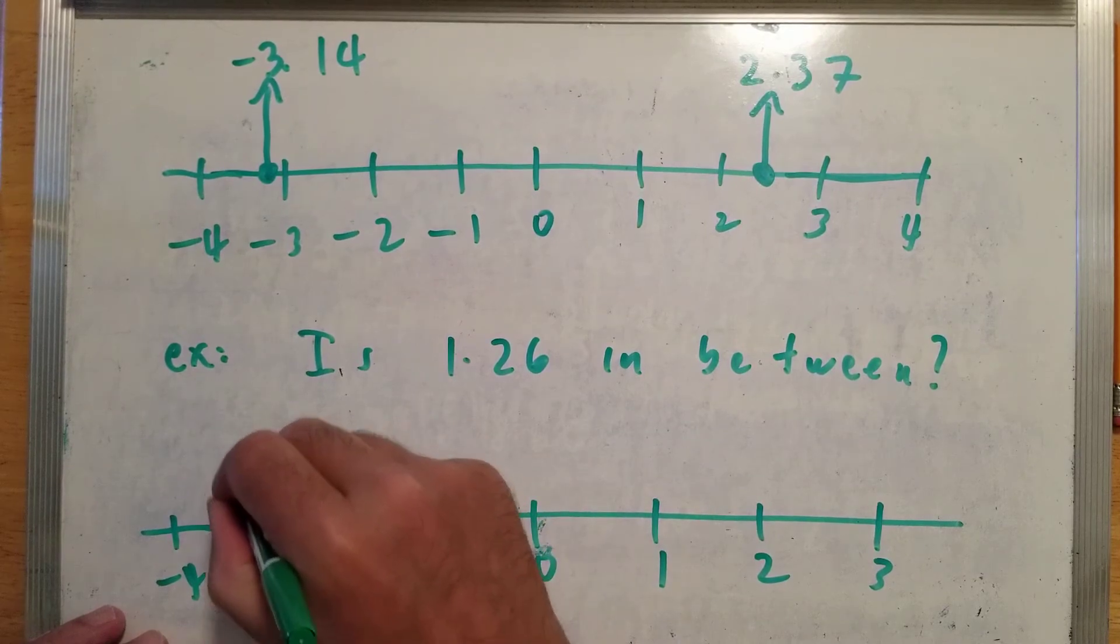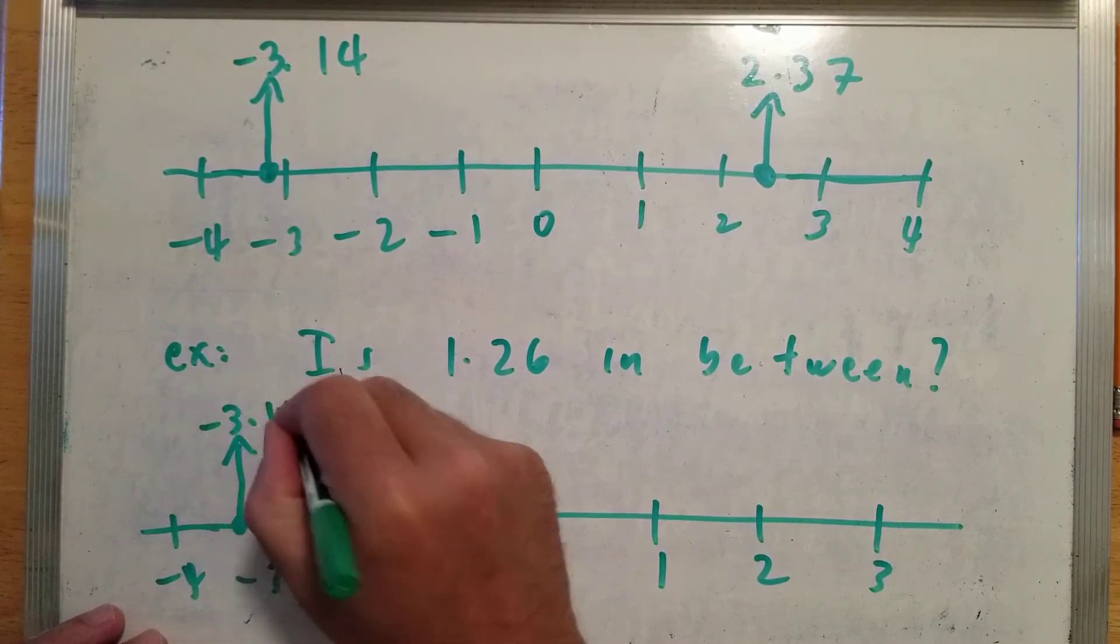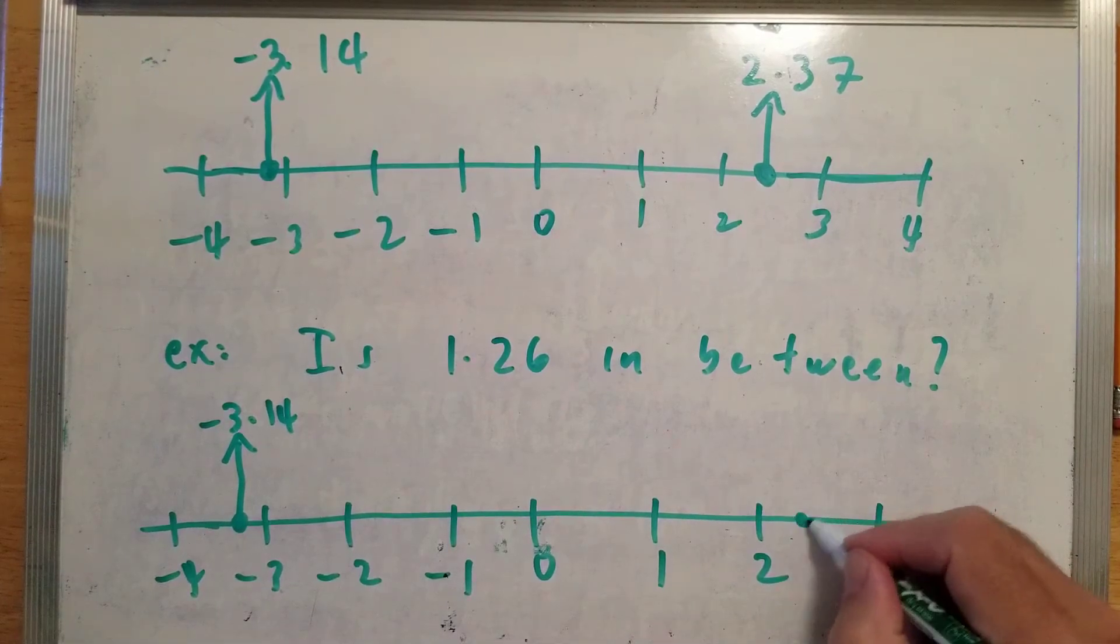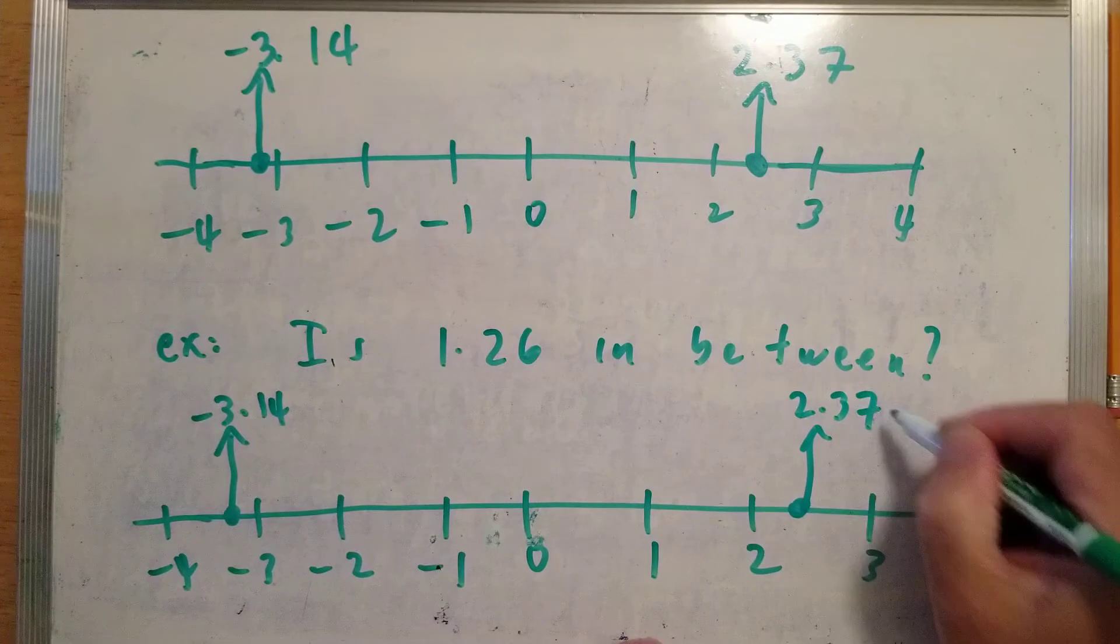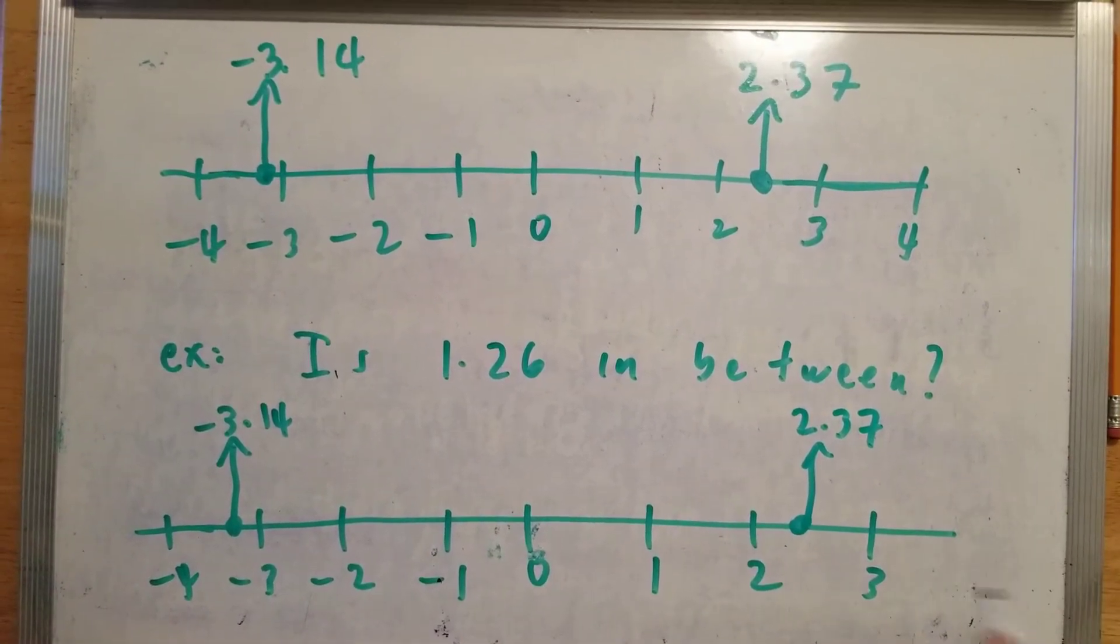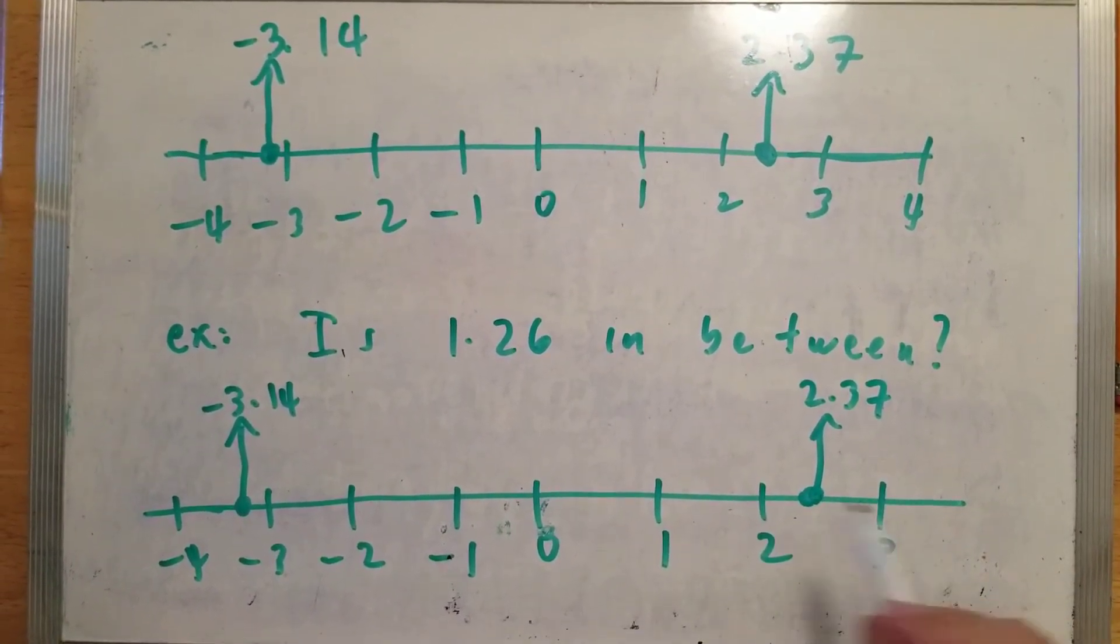So, here's the place that I'm calling negative 3.14. Here's the place that's about 2.37. I'm just kind of estimating where these decimals are. I'm not going to get out a micrometer and measure.